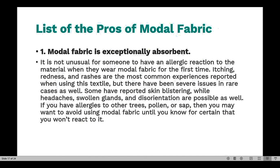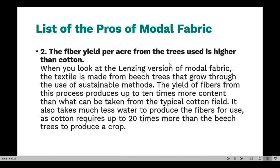Modal fabric is exceptionally absorbent and provides a soft and smooth texture. The fiber yield per acre from the trees used is higher than cotton. The Lenzing version of Modal fabric is made from beech trees grown using sustainable methods, and the yield of fibers from this product is significantly higher — the process produces up to 10 times more fiber content than what can be taken from a typical cotton field.